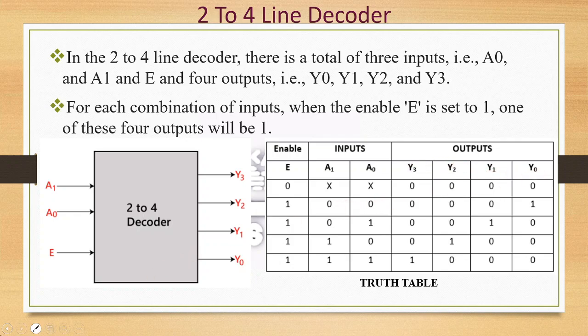Looking at the truth table: when inputs are 0,0 that corresponds to Y0; when inputs are 0,1 that corresponds to Y1; when inputs are 1,0 that corresponds to Y2; and when inputs are 1,1 that corresponds to Y3. This is the decoder truth table. When enable is 0, no output is produced; when enable is 1, the output corresponds to one of the 4 channels based on the input combination.